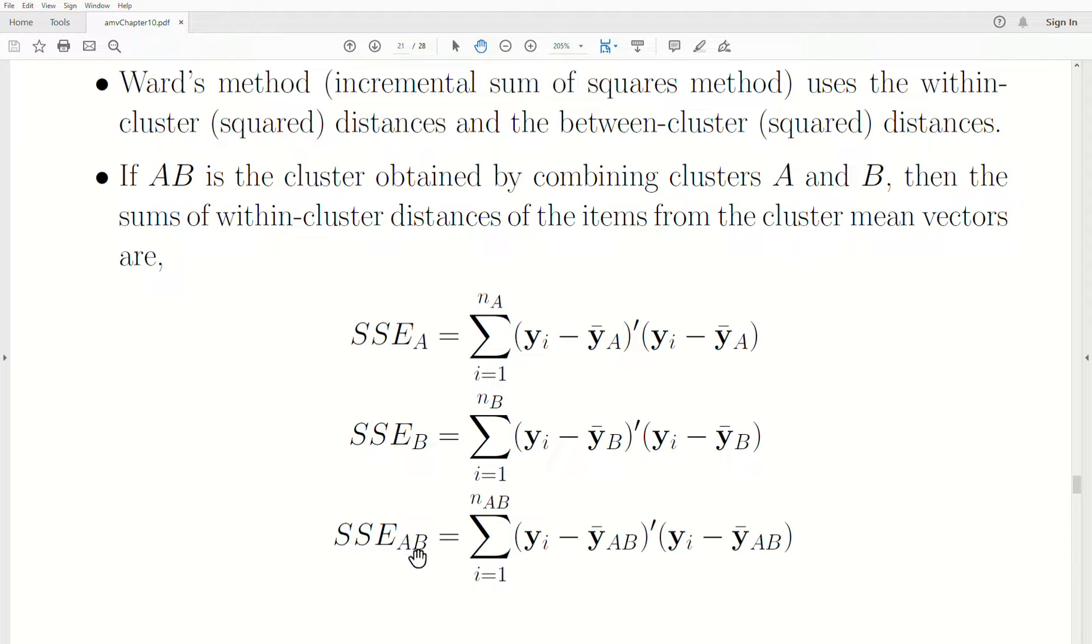When we join clusters, each of them separately has their own sum of squares within. And then when we join them, it gets a little bit bigger.